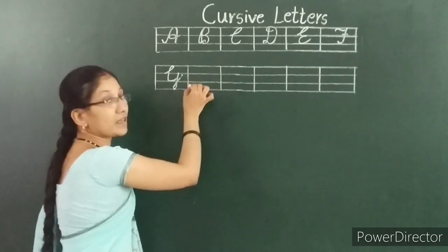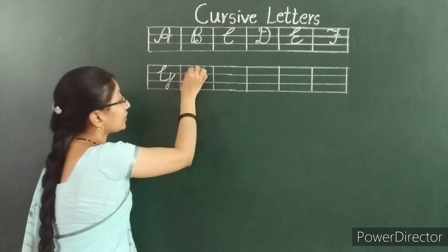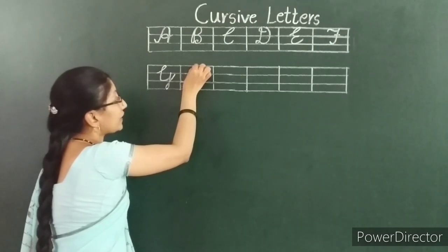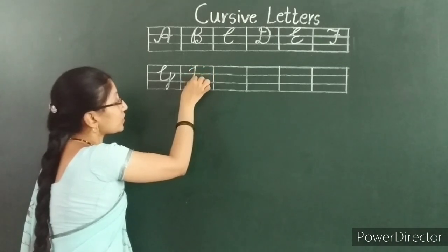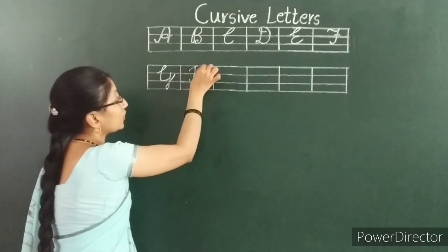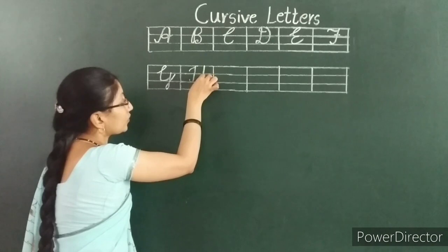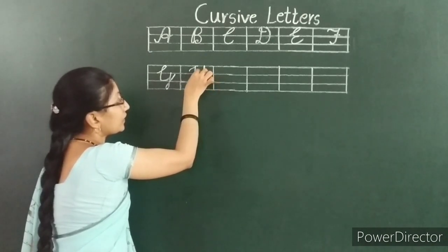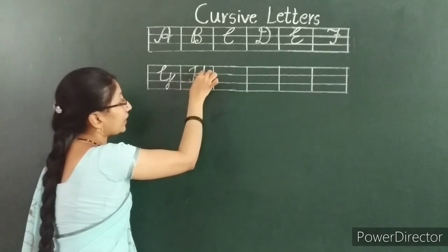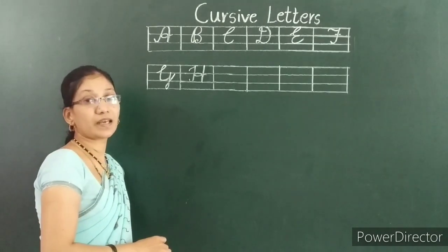Next, H. Start from here. A smooth sliding line, move upward. Again, it comes down. Take a turn, one more line. You start from here, move down, move a little, then take a loop. This is H.